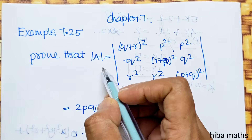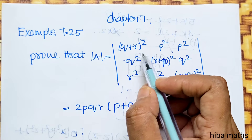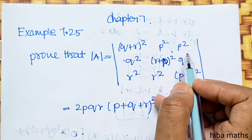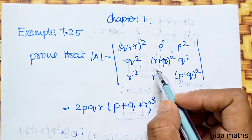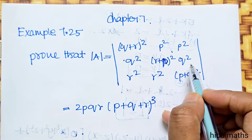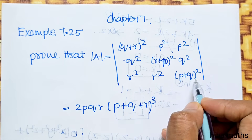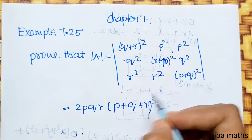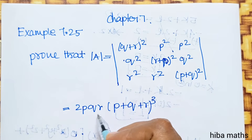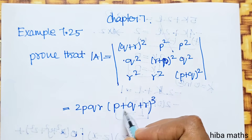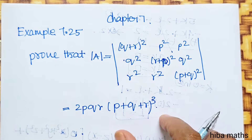Prove that modulus A is equal to: the determinant with entries (Q+R)², P², P² | Q², (R+P)², Q² | R², R², (P+Q)², which is equal to 2PQR(P+Q+R)³.